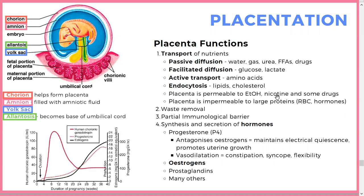Importantly, the placenta is permeable to alcohol, nicotine, and drugs — so prenatal care is critical. It is impermeable to large proteins, so there's no direct blood exchange between mother and fetus. The placenta also handles waste removal, provides immunological barriers, and synthesizes hormones including progesterone, estrogen, and prostaglandins.